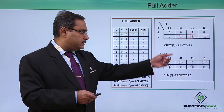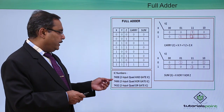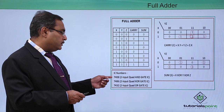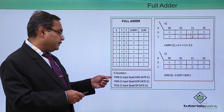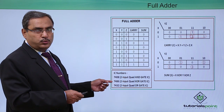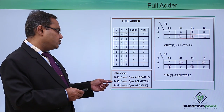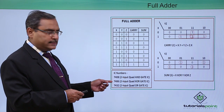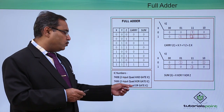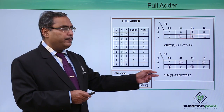From these functions, we find that we require IC 7408, which is a 2-input quad AND gate IC. We also require IC 7486, which is a 2-input quad XOR gate IC. Quad means there are 4 pieces — quadruple. We require IC 7432 for the 2-input quad OR gate. So these 3 ICs will be required for the implementation.